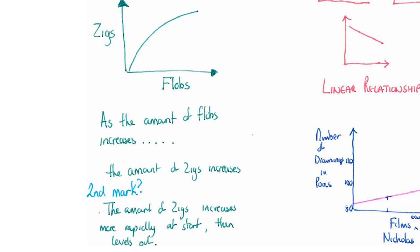If there's a third mark up for grabs, you might want to talk about perhaps as you double the number of flobs, the number of zigs doubled. That isn't the case here, but you may have to give read-offs as well to support it. We'll see an example later on.